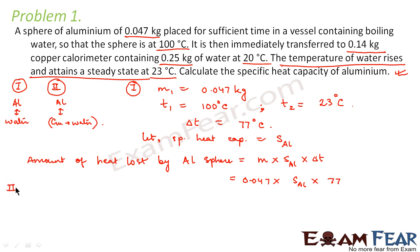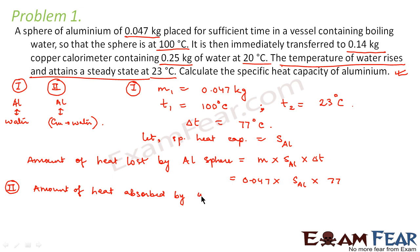Now let us look at the next scenario where the aluminium sphere is in a copper calorimeter containing water. In this case, what would be the total amount of heat absorbed by the system — that is water plus calorimeter? The amount of heat lost by the aluminium sphere is equal to the amount of heat absorbed by the calorimeter system, that is water plus calorimeter.